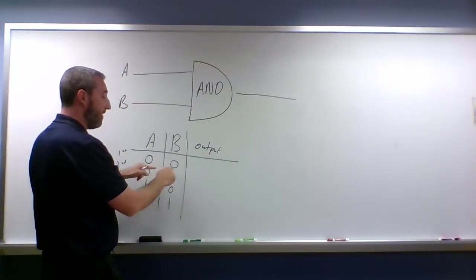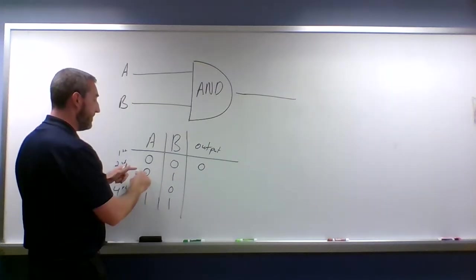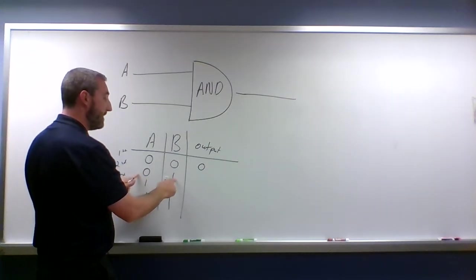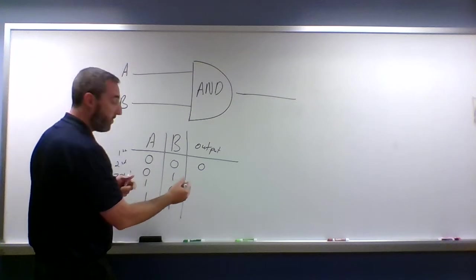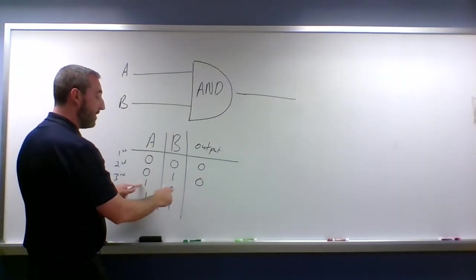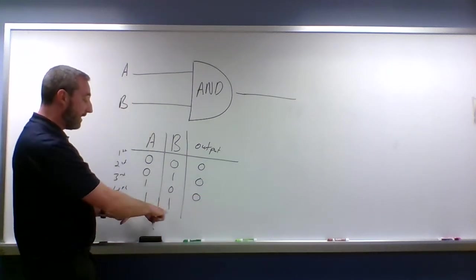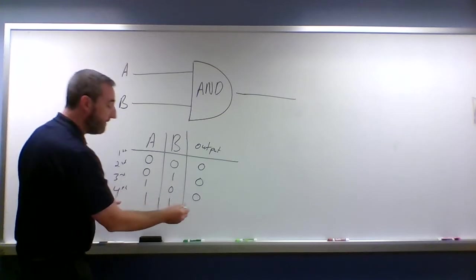In the first scenario where A is off and B is off, the output is also off. In the second scenario where A is off and B is on, they're not both on, so the output's still off. In the third scenario where A is on and B is off, they're still not both on—the output's zero. And then in the last scenario where both of them are on, finally this little logic gate turns on.